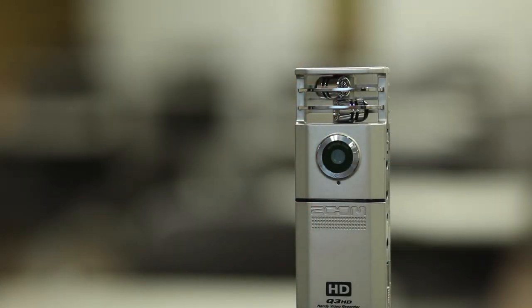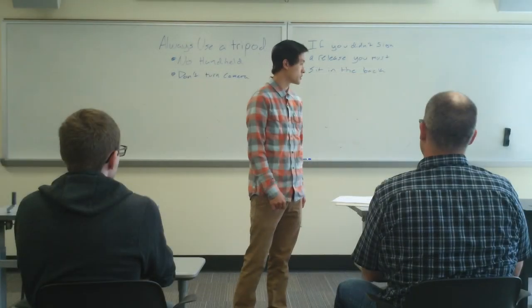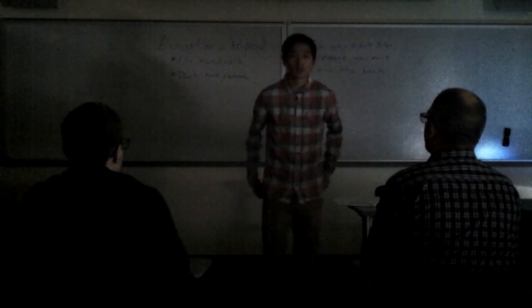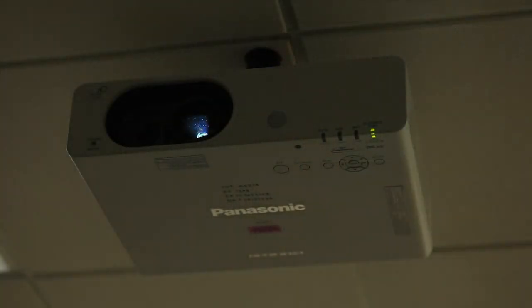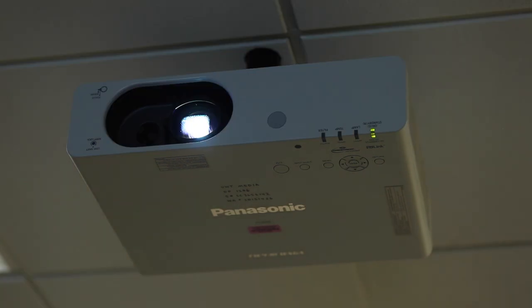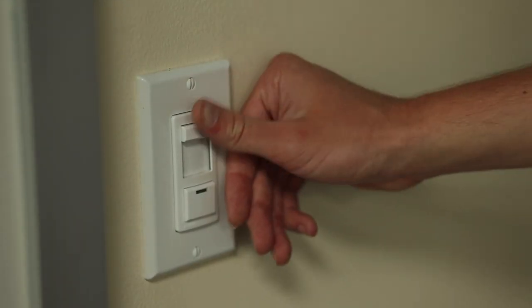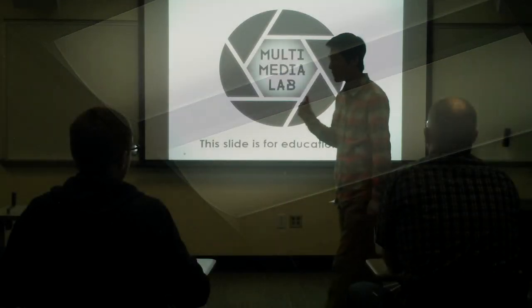Lastly, make sure that the room is well lit. The Zoom Q3 HD doesn't capture as crisp of an image in dimmer light. If using a projector or document camera, try cracking the blinds a little, or only turn off the front half of the classroom — just enough to read the overhead.